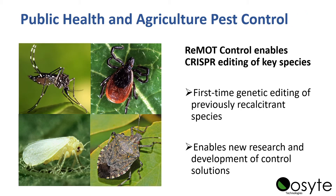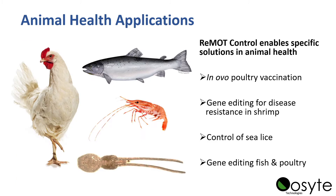We've already used this by fusing it to Cas9 to do CRISPR editing of key species. It's enabled first-time genetic editing of species we weren't able to do before, such as ticks and whiteflies, and it's enabling new research for arthropod pest control strategies. It also has significant animal health applications — for instance, in ovo poultry vaccination, where you can inject a chicken and essentially vaccinate all of the offspring for potential diseases.